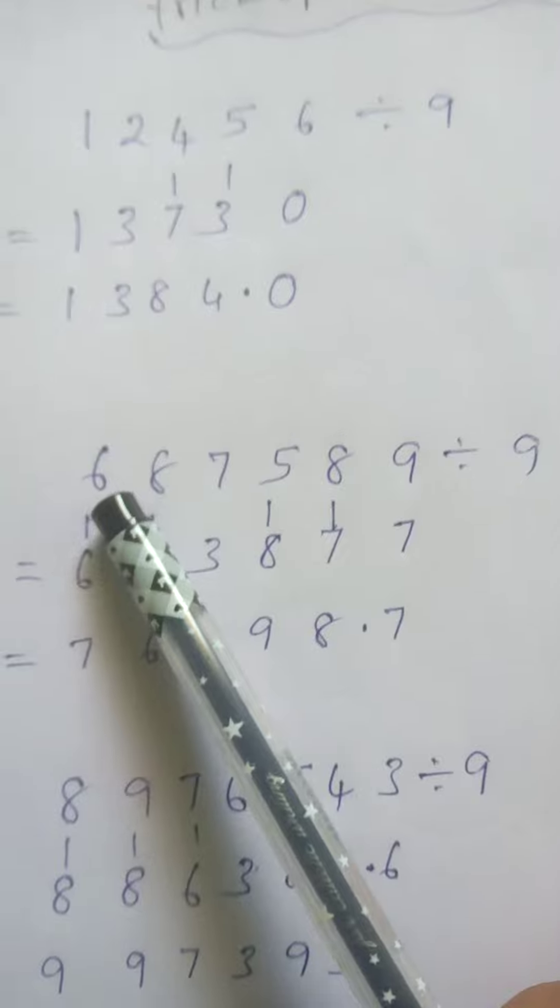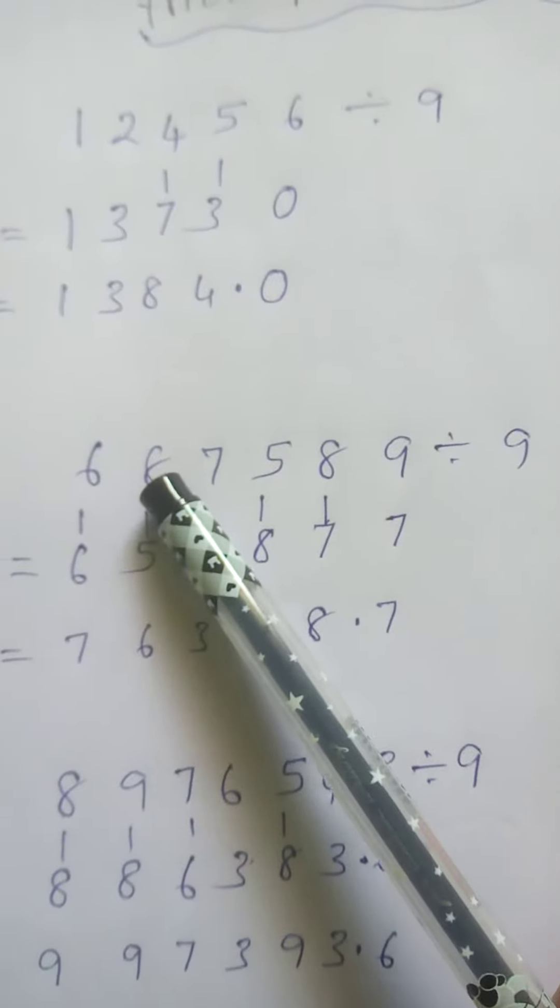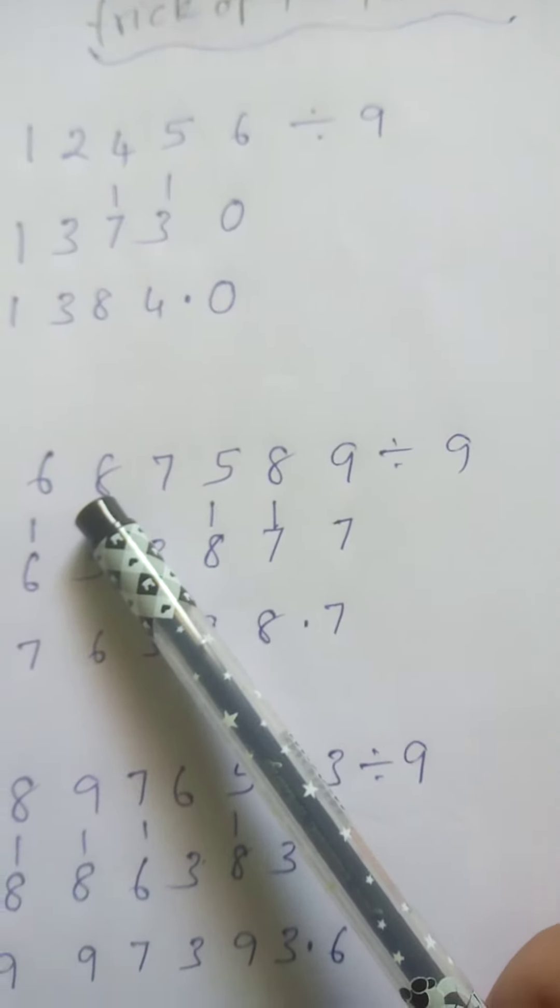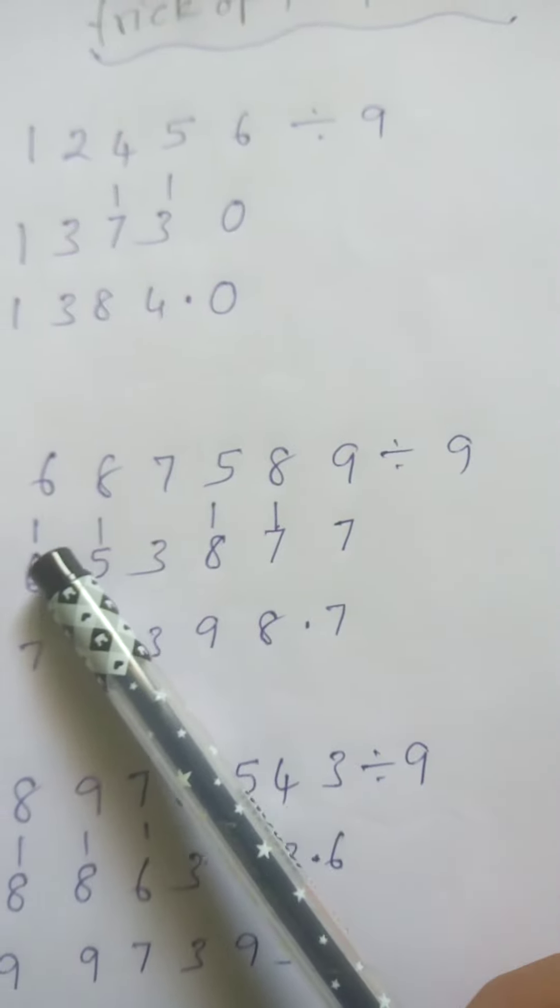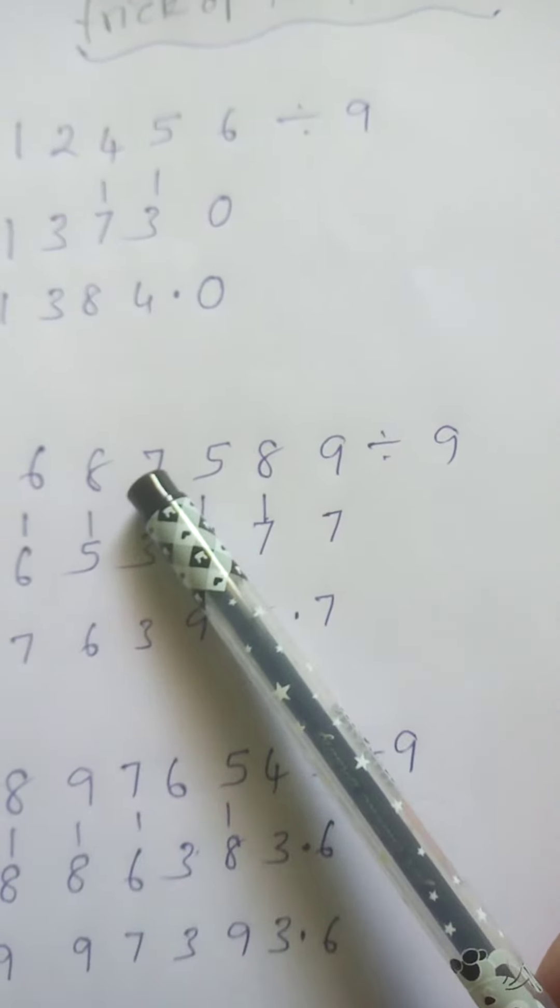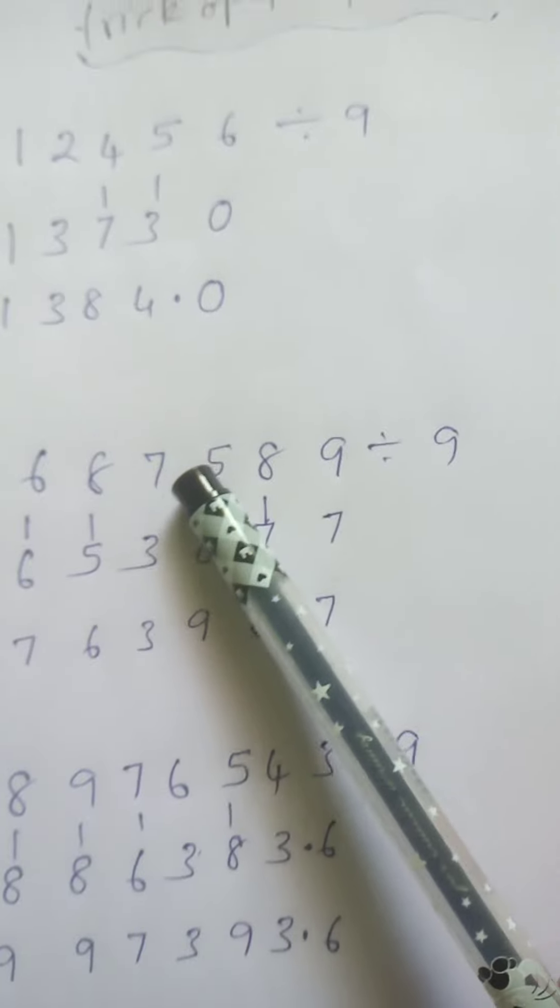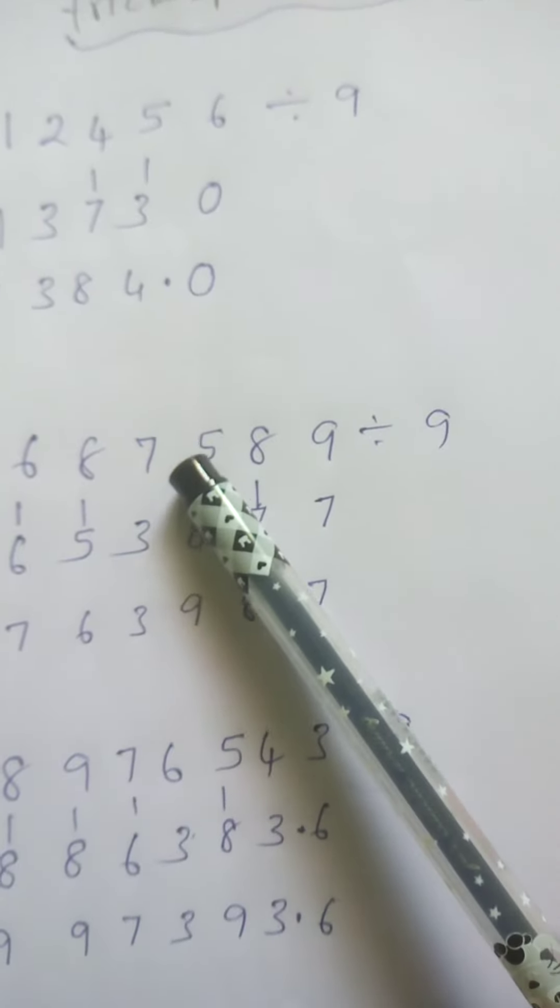Another example: 6 as it is. 6 plus 8 is 14. 14 means subtract 9. 14 minus 9 is 5, write 5, carry 1. 5 plus 7 is 12, 12 minus 9 is 3, carry 1. 3 plus 5